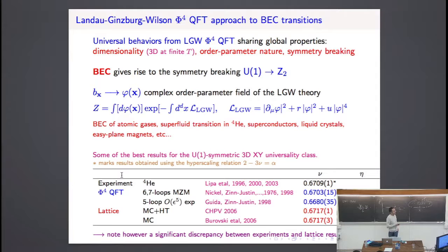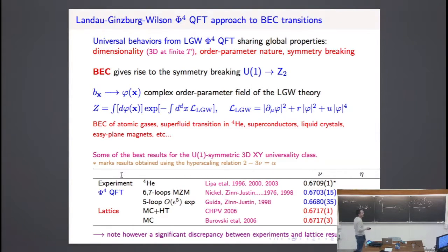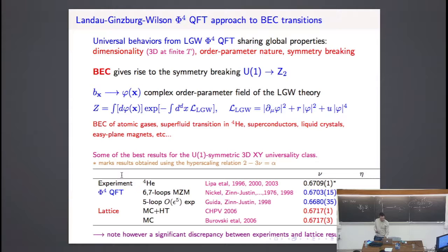These numbers can be compared with numerical results from Monte Carlo and high-temperature expansions — essentially lattice techniques — by two different groups, and with the experiment I showed you before. Field theory is consistent with both, though the error is quite large. There is a significant discrepancy between lattice techniques and the experiment; we can discuss the reasons, but this is the official result of these papers. Field theory agrees with both since the error is sufficiently large to encompass both.